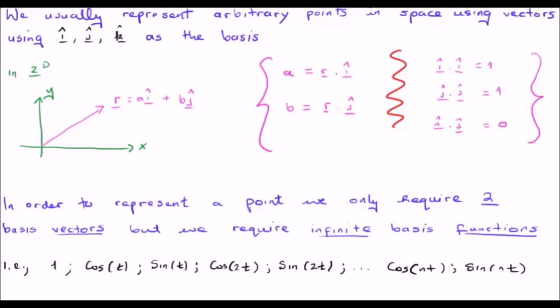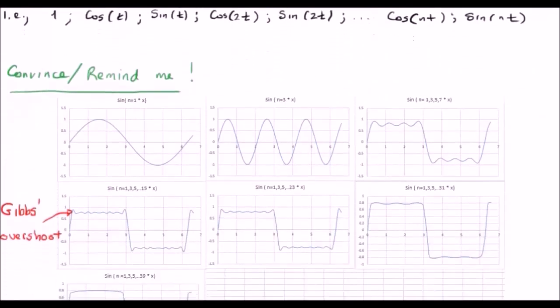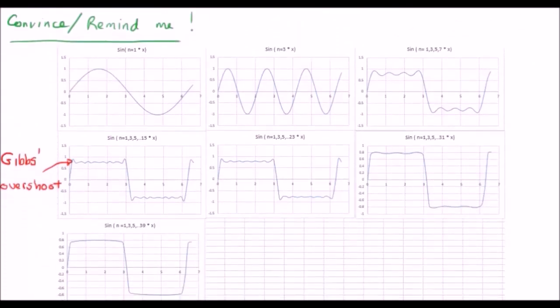So how do I convince you that this is the case? How do I convince you that, in fact, we can represent functions using cosines and sines? So I'm going to try and convince or remind you. Let's say we want to represent a square wave. We start off with a single sine wave here, so sine 1 times x.